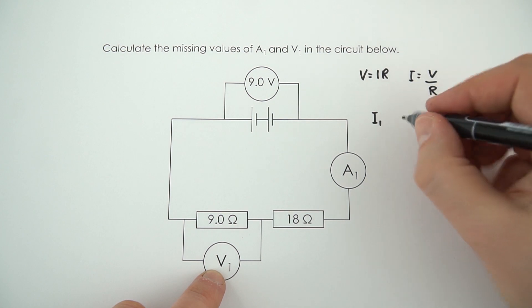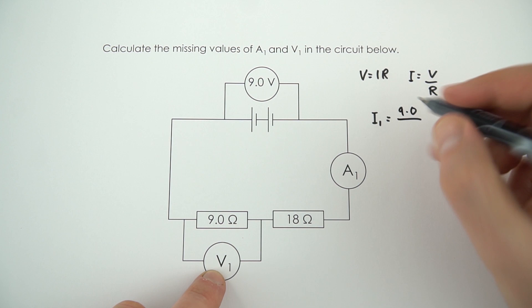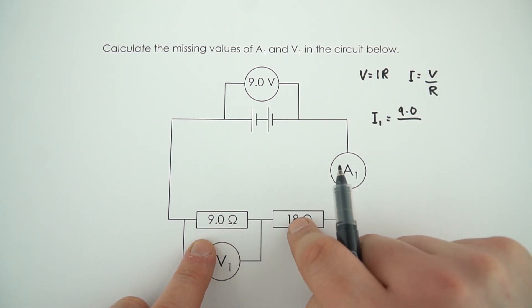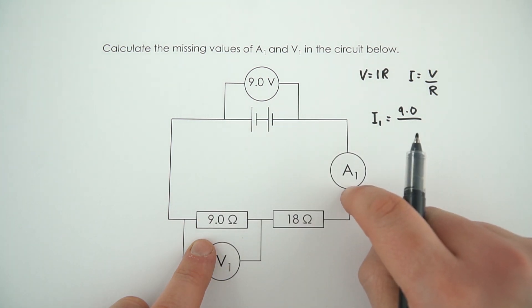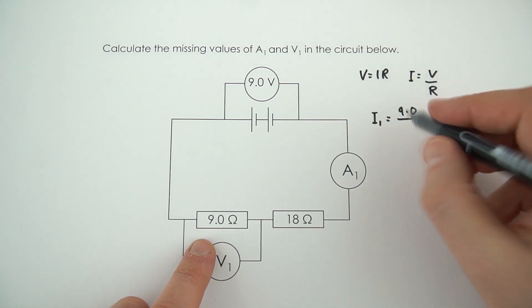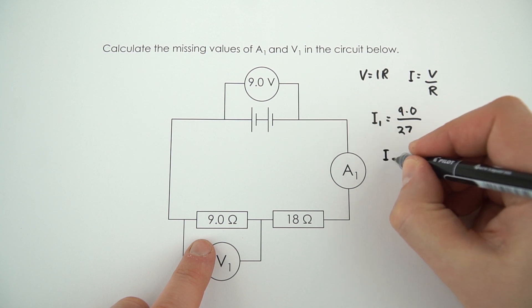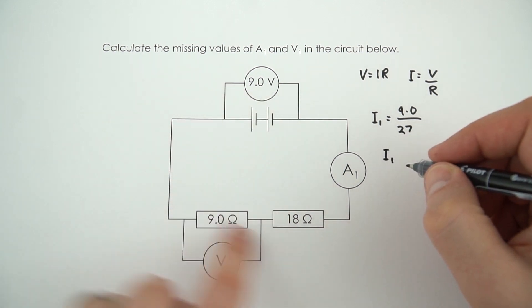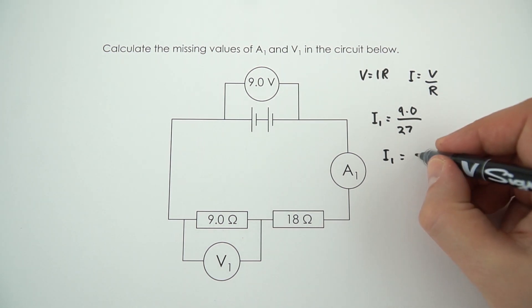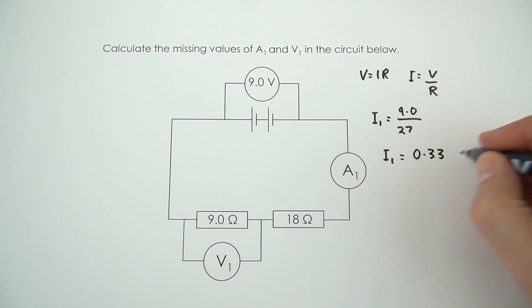In this case, the value of V is going to be equal to 9.0 volts. The total resistance — because we've got a 9 ohm resistor and an 18 ohm resistor, and that's the only thing in this series circuit — is going to be equal to 27 ohms. That means the value of the current in the circuit, which is going to be the same everywhere because it's a series circuit, is going to be equal to 9 divided by 27, so that's just a third — 0.33 amps.